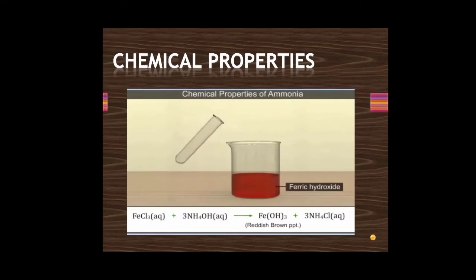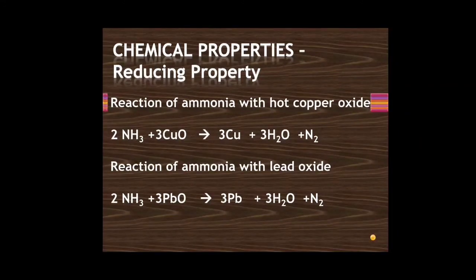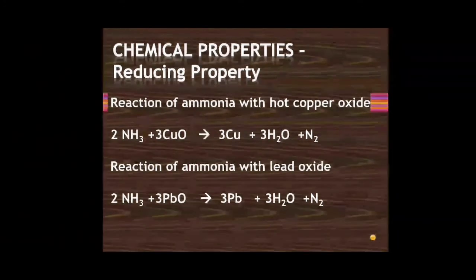Chemical properties of ammonia: it reacts with ferric chloride to give a reddish brown precipitate of ferric hydroxide and ammonium chloride salt in aqueous state. It also reacts with copper sulfate solution to give a deep inky blue color, due to the formation of a complex salt — tetramine copper(II) sulfate.